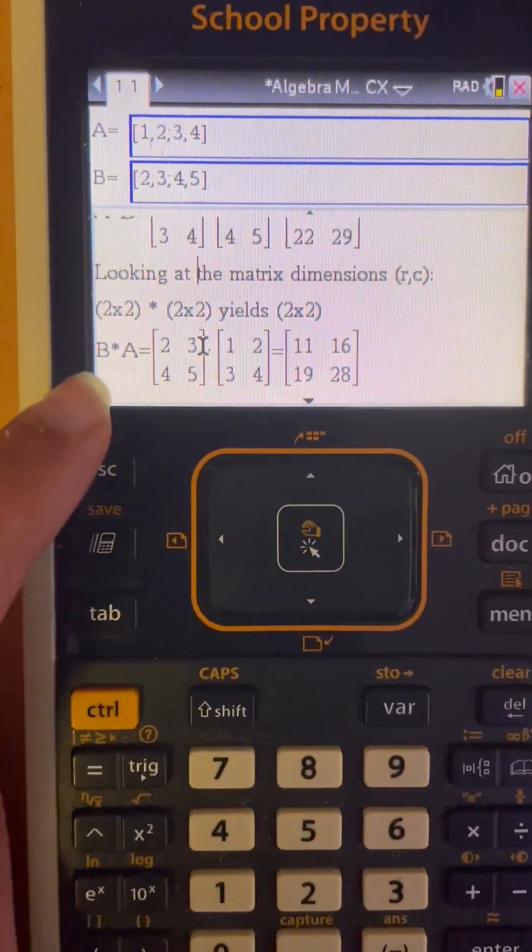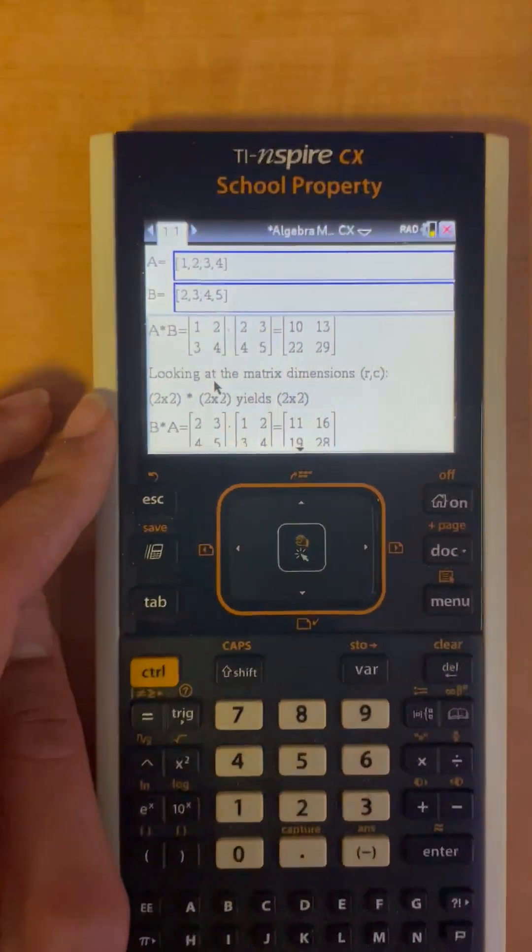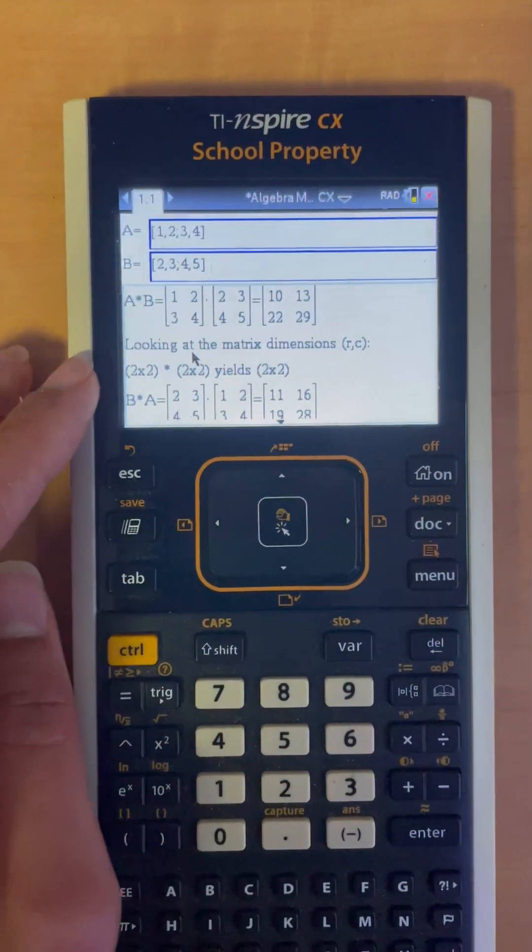Here we have B times A, and here we have A times B, and all the steps are right in front of you, that easy.